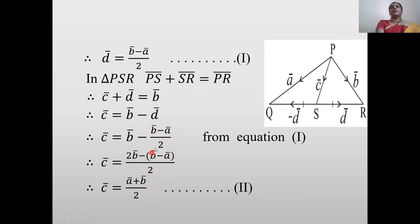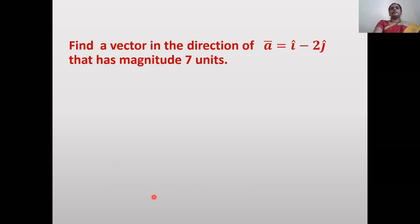So in this triangle we have expressed c̄ and d̄ in terms of ā and b̄: d̄ = (b̄ - ā)/2 and c̄ = (ā + b̄)/2.